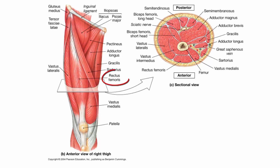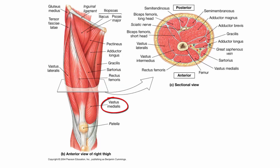The rectus femoris flexes the thigh and extends the leg. The vastus lateralis extends the leg, and the vastus medialis also extends the leg. These make up the quadriceps — and quad means four. But wait, that's only three muscles: vastus medialis, rectus femoris, and vastus lateralis. Where's the fourth? If we cut the rectus femoris and move it out of the way, underneath — as seen in this cross-sectional view — we find the vastus intermedius. That gives us four muscles making up the quadriceps.